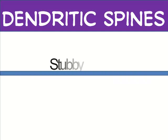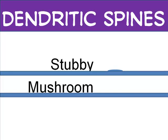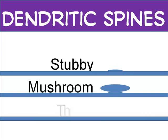Some dendritic spines are stubby — they look like little bumps or mounds. Some, called mushroom spines, look like mushrooms. But most dendritic spines have a thin neck and a ball-shaped head. They look like the pins you use on your bulletin board, only with flexible necks.